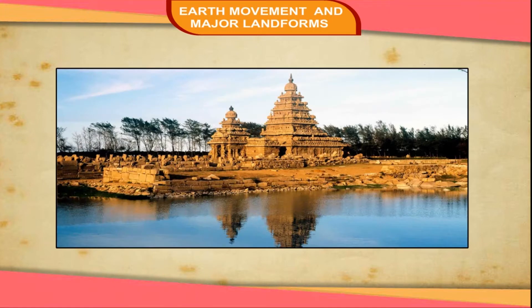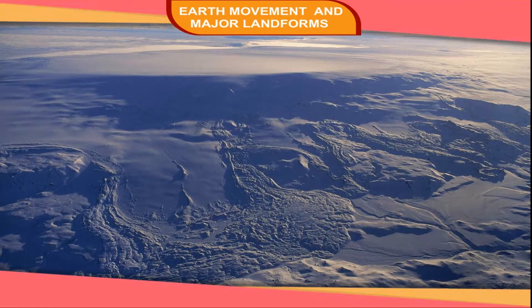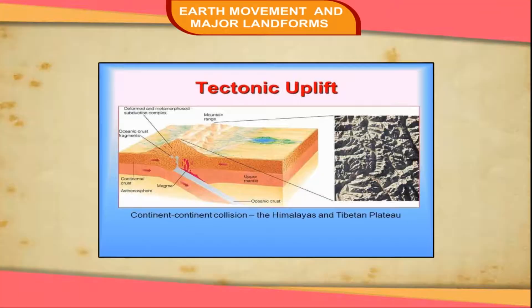Slow movements. Some changes in the Earth's crust are so slow that they take about hundreds of years to become noticeable. They are called slow changes. The Mahabalipuram temple, which now stands in the sea, is an example of this movement. Slow movements are further classified into vertical and horizontal movements.